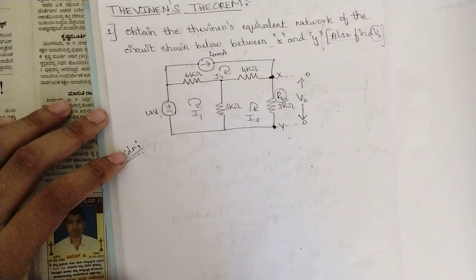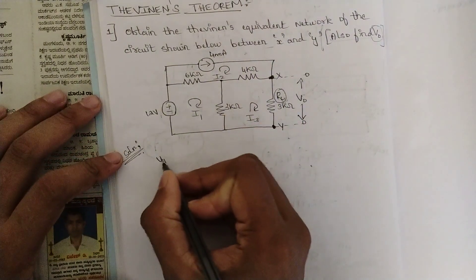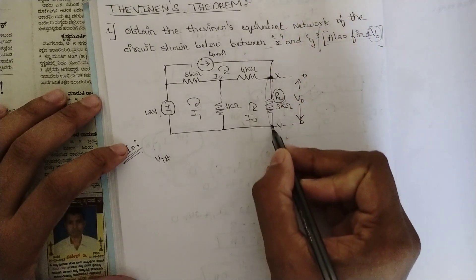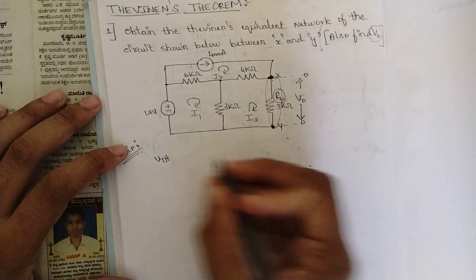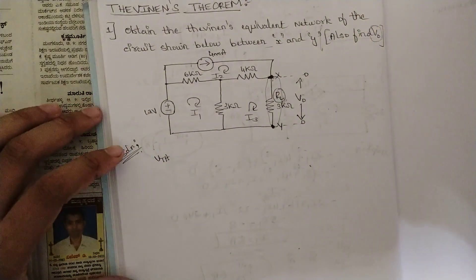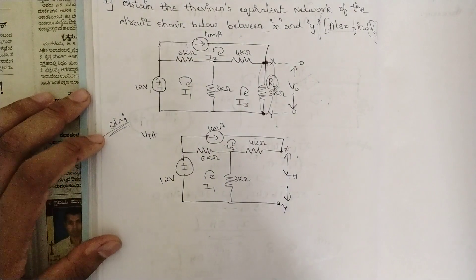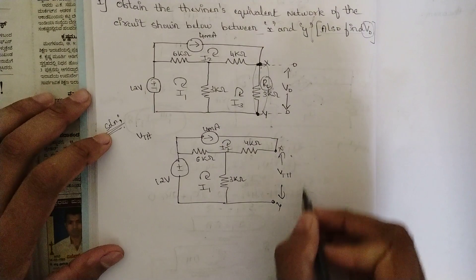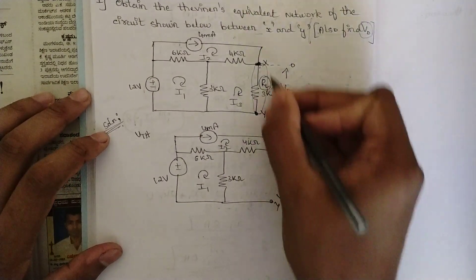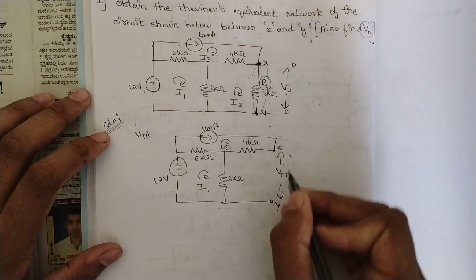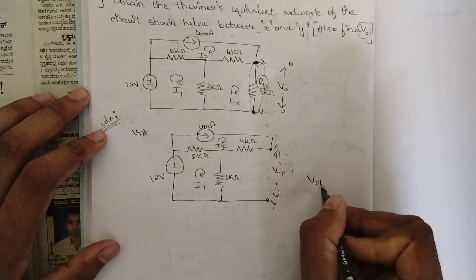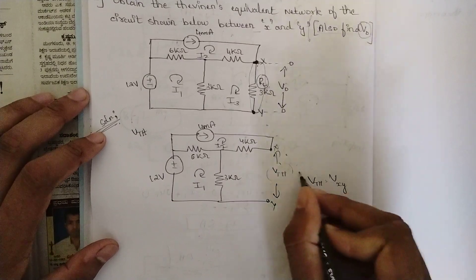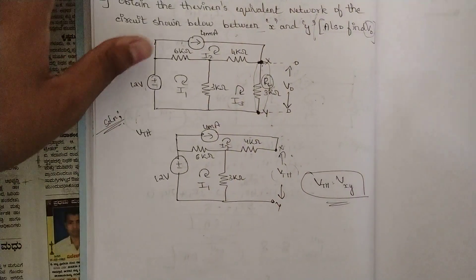The first step is calculation of Vth. To calculate Vth, we remove the complete branch of the load impedance and rewrite the circuit. I have rewritten the circuit here, and in place of the load impedance I have written Vth. This Vth is equal to V_xy — you can name it like that optionally.